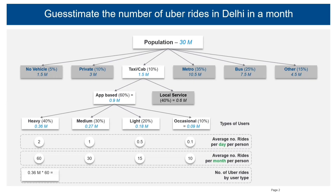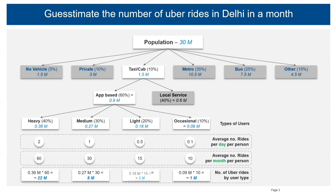So I have 0.36 million multiplied by 60, which gives approximately 22 million for heavy users, and similarly 8 million for medium users, about 3 million rides for light users, and approximately 1 million rides taken by occasional users in a month.